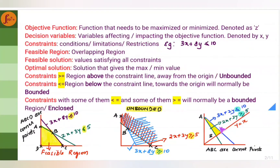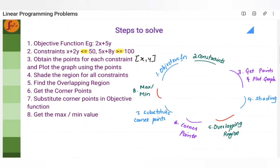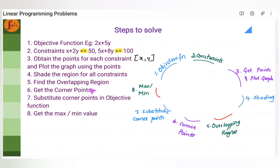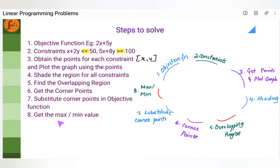These are the steps to formulate an LPP and find the optimal solution. First, arrive at the objective function — maximize profit or minimize cost. Then get the constraints. Next, obtain points for each constraint by putting x = 0 and y = 0. Then plot these points on the graph, shade each constraint region (above or below the line), and find the overlapping region where all constraints meet. Then get the corner points — the edges of that region. Finally, substitute the corner points into the objective function to get the value of Z, which gives the maximum or minimum value.